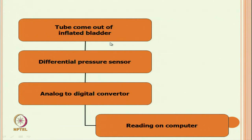The same bladder tube already mentioned - from the bladder there are 2 tubes. One is the input tube for pressure exhaustion, the air inlet, and the other tube is for measuring the bladder pressure. This tube is connected with the digital pressure sensor, and through the A-to-D converter we get the pressure value through the computer. It is connected with the computer.